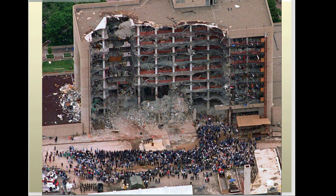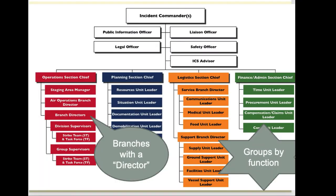The Oklahoma City bombing is an example of where the incident command structure was used — and in all major events it is used these days. There are branches underneath the section chiefs, who are considered directors. As you get further down the tier and it becomes a bigger incident, there are other functional groups. People are still divided by specialties and have specific names so we know what everybody's doing or who to go to for assistance.